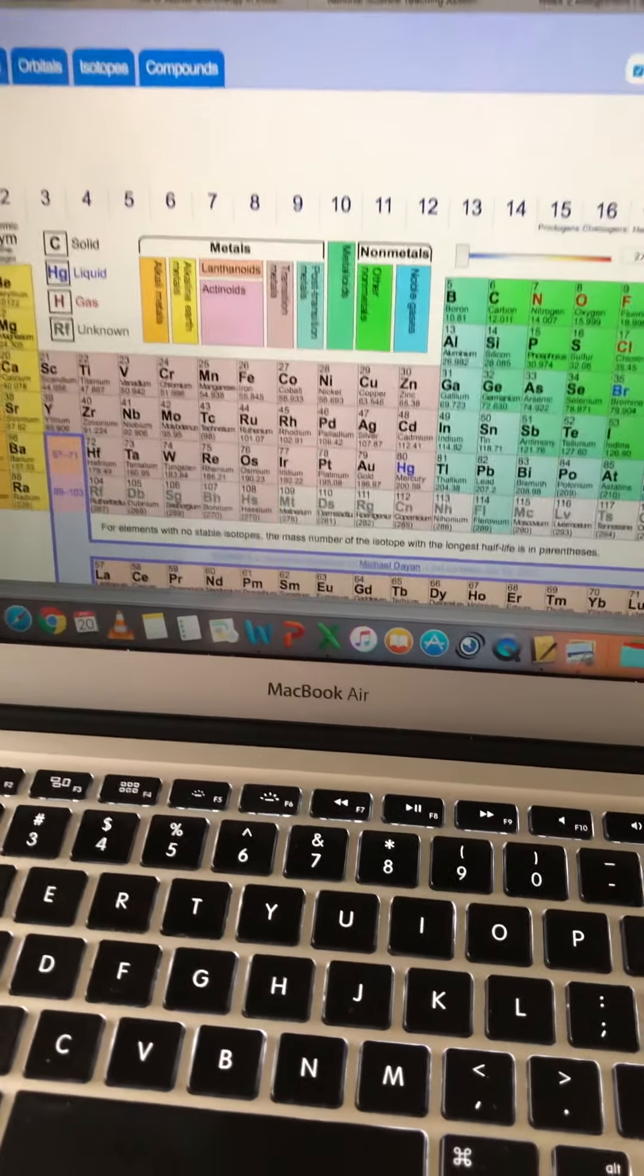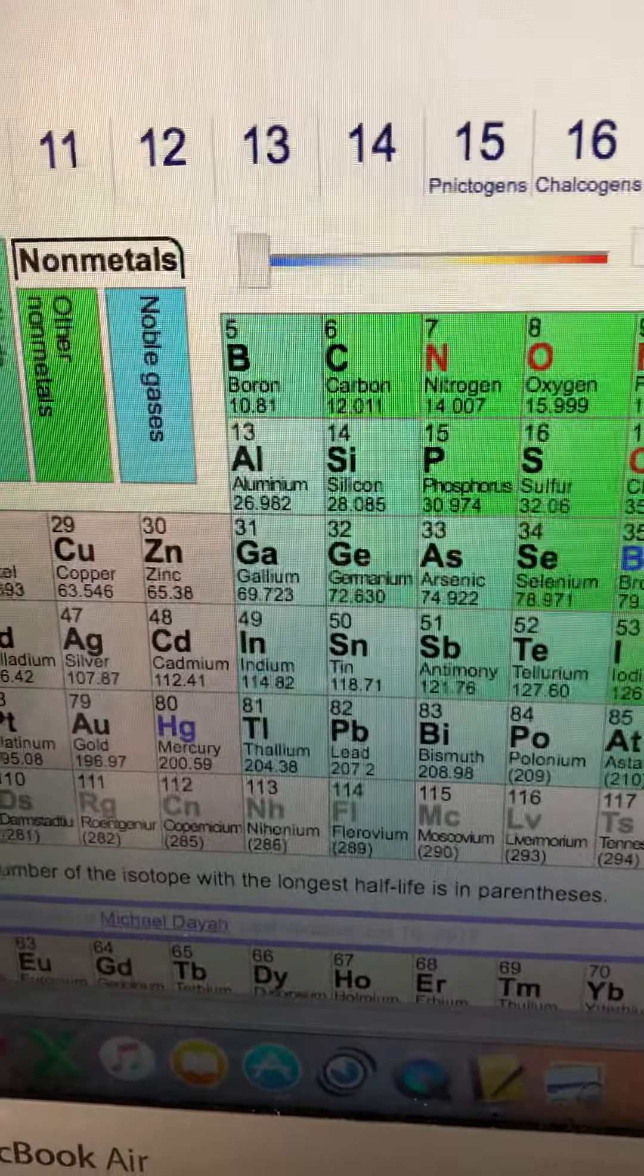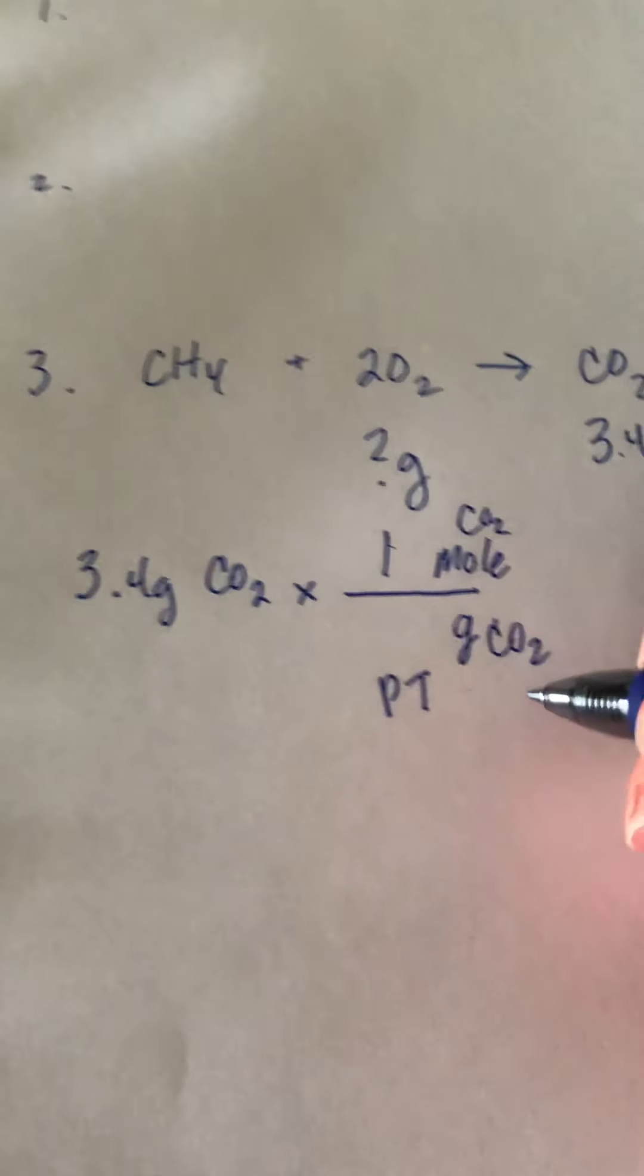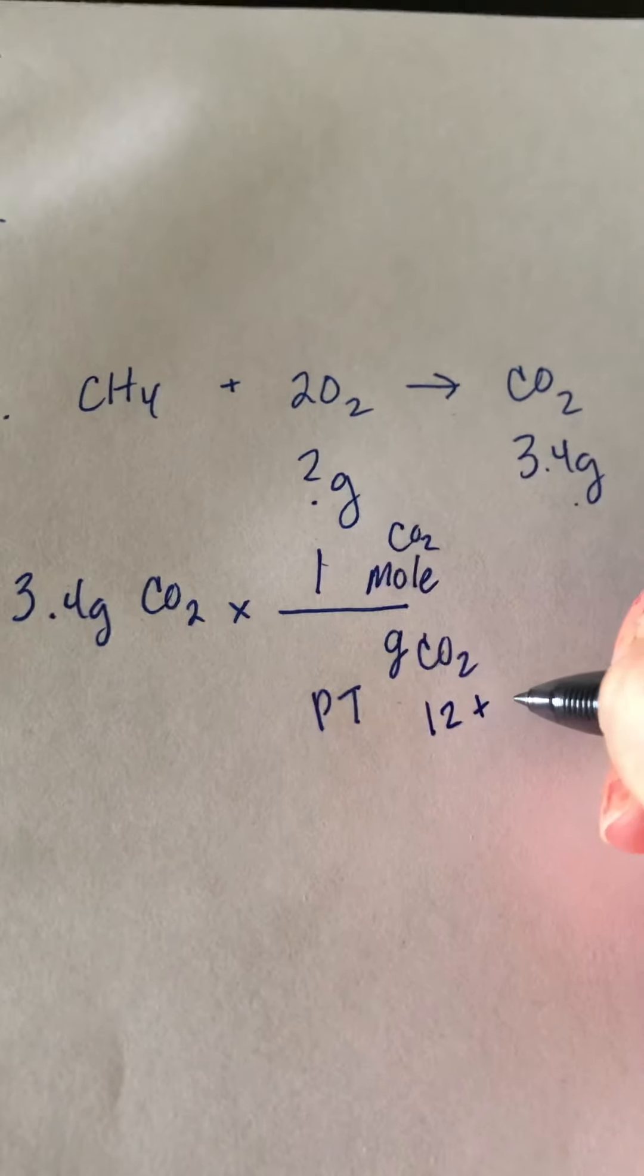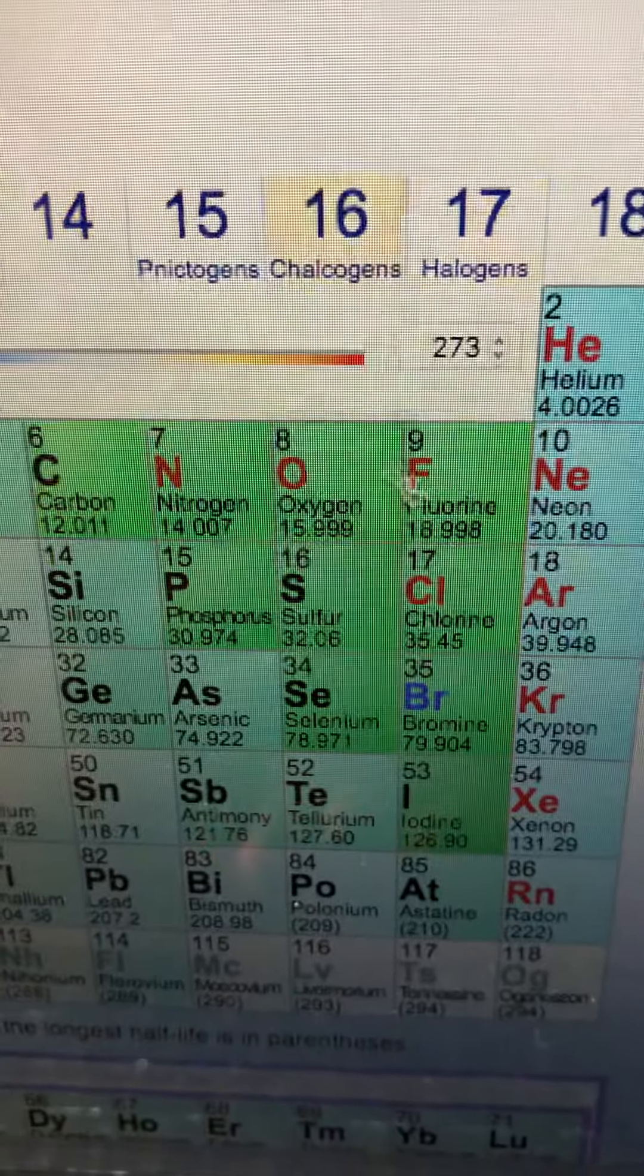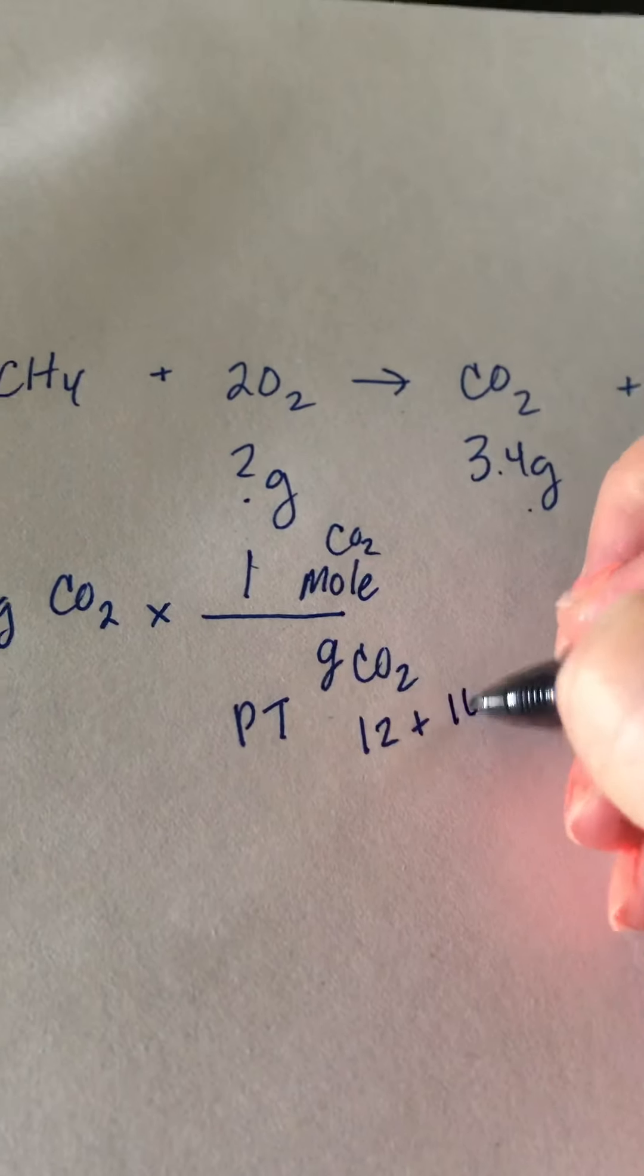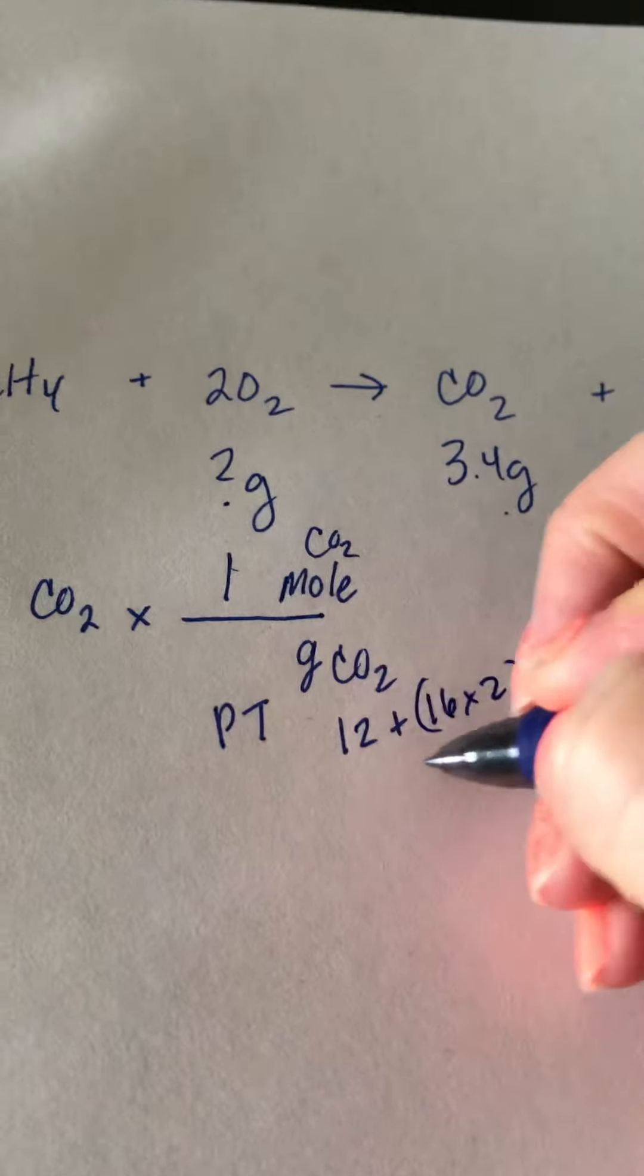So there's carbon right here, the mass is 12, so there's one carbon atom, and then there's two oxygen atoms. So look at oxygen, the mass is 16, so we're going to add 16 twice. So just take 16 times 2, which is 32.